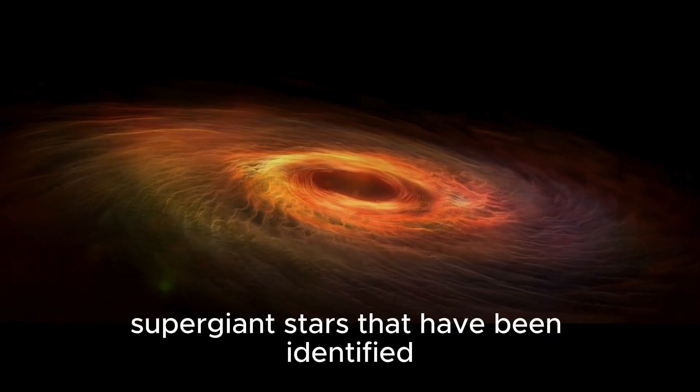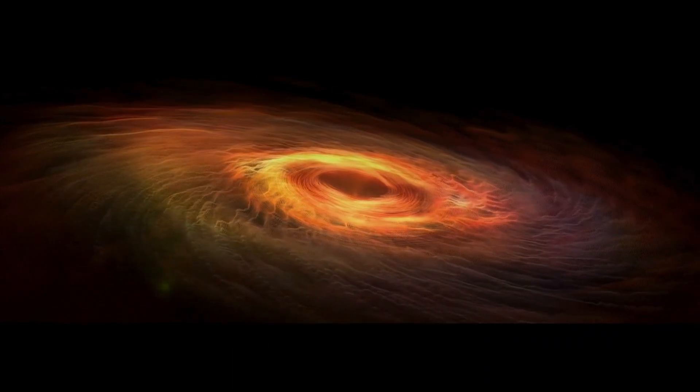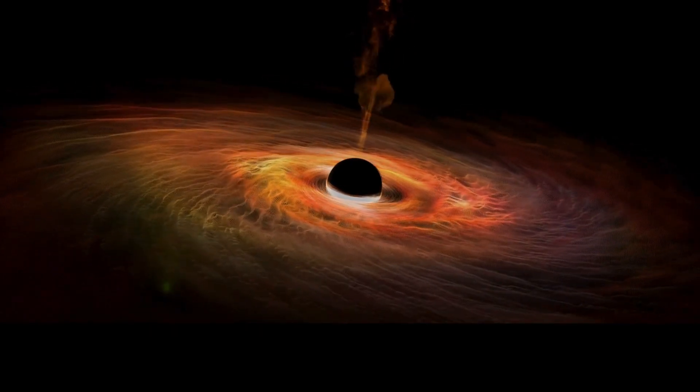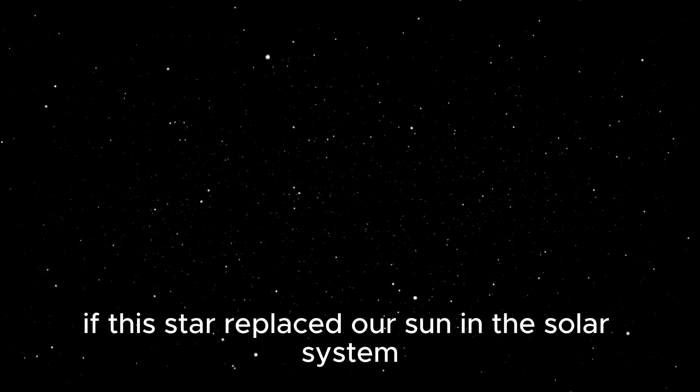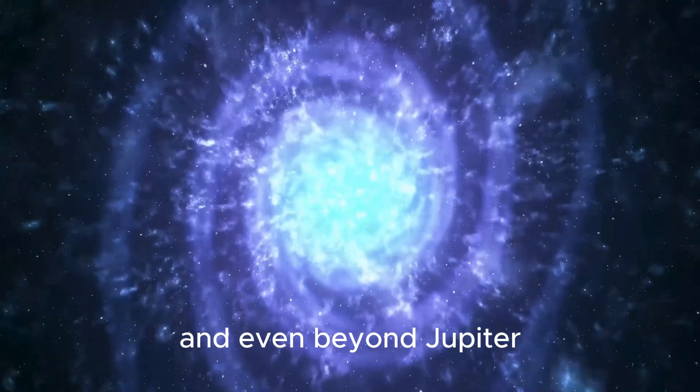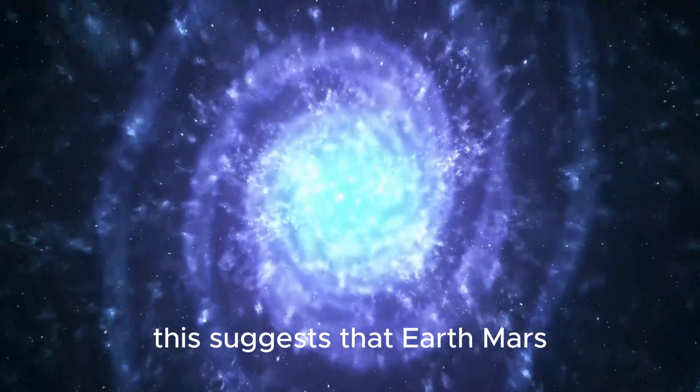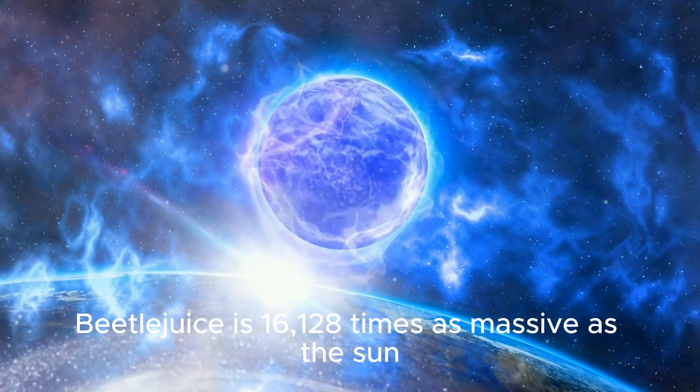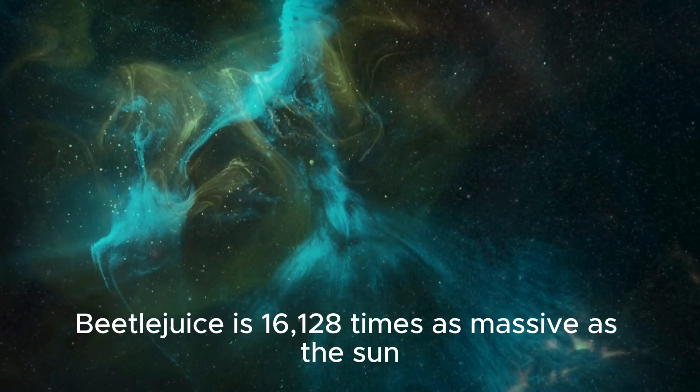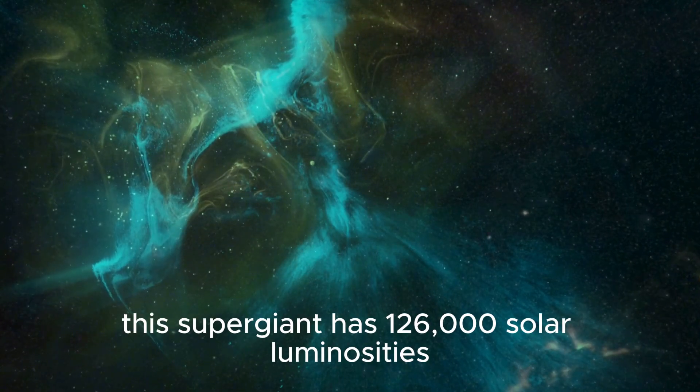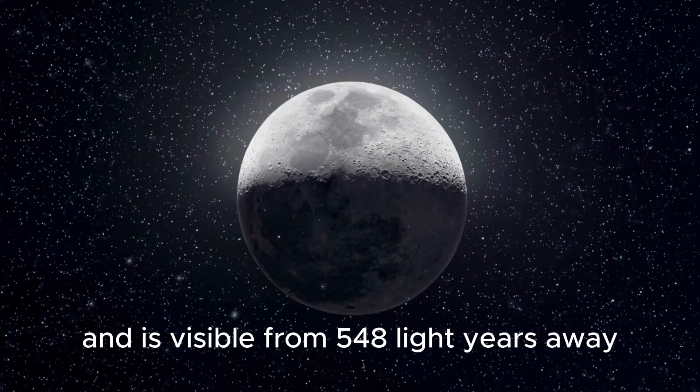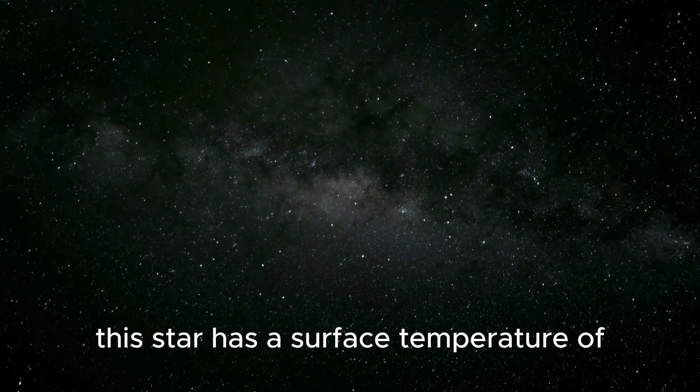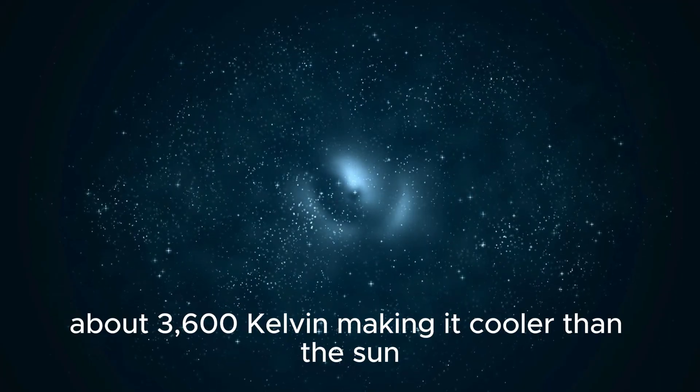Betelgeuse is the brightest red supergiant star and is closest to Earth in our galaxy. There are just 200 red supergiant stars that have been identified. The Sun has a radius that is around 764 times smaller than Betelgeuse. If this star replaced our Sun in the solar system, it would reach past the asteroid belt and even be on Jupiter. This suggests that Earth, Mars, Venus, and Mercury would all be completely absorbed. Betelgeuse is 16,128 times as massive as the Sun. This supergiant has 126,000 solar luminosities and is visible from 548 light-years away. This star has a surface temperature of about 3,600 Kelvin, making it cooler than the Sun.